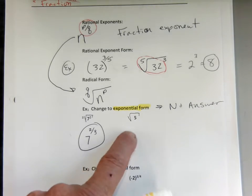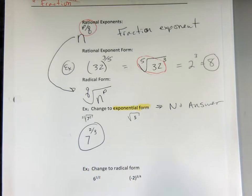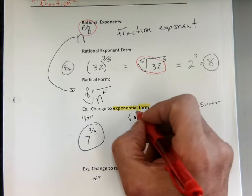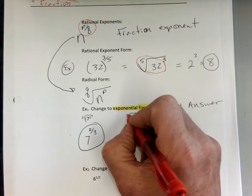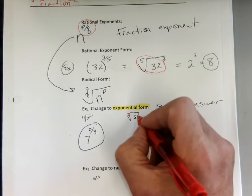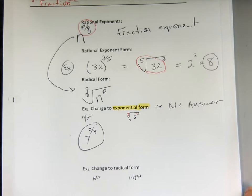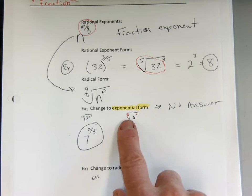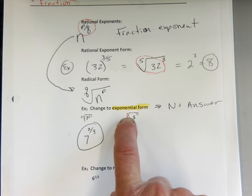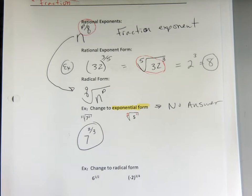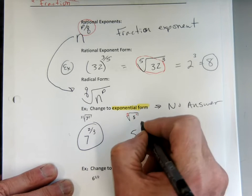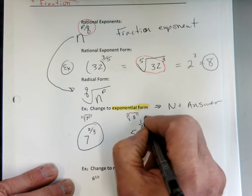Now, square root of 5 — there are two invisible numbers. There's an invisible 2 because it's a square root, and the power is 1. It's 5 to the 1/1. So we're going to rewrite this as 5 to the 1/2 power.